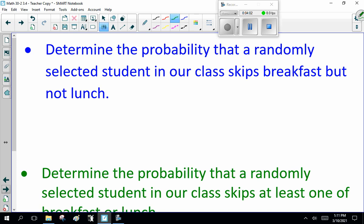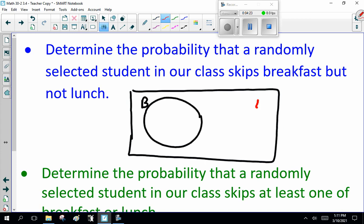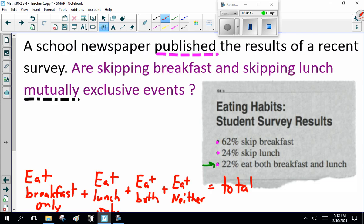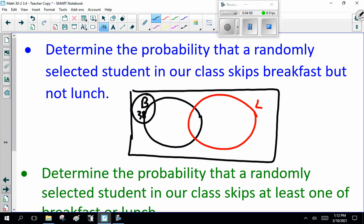Determine the probability that a randomly selected student in our class skips breakfast but not lunch. So, breakfast, eats lunch, both, neither. So how do we do this? Well, let's look carefully at our data. 62% skip breakfast. How many eat breakfast? 100% minus 62 is 38. So 38% eat breakfast.